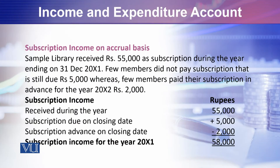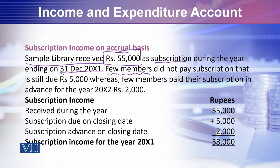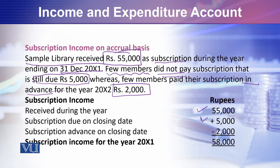Let me discuss a small scenario with you. For example, a library received 55,000 as subscription — this would appear as cash. This is related to 31st December 20X1. Some members did not pay their subscription and it is still due; that due subscription is still your income, so you add it. Whereas a few members paid their subscription in advance — 2,000 was received in advance. So that 2,000 within the 55,000 you minus out. Then your income for the year is 58,000. This is how you calculate your income for the year on an accruals basis.